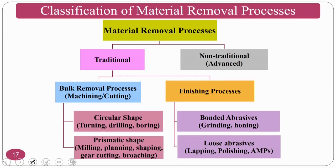Machining is a material removal process. There are two major varieties: traditional and non-traditional (advanced) machining processes. This course deals with only traditional machining processes. In traditional machining processes we have bulk removal processes and finishing processes. In bulk removal or cutting processes, the main aim is material removal — how much material is being removed. In a finishing process, the main aim is the surface finish achieved.